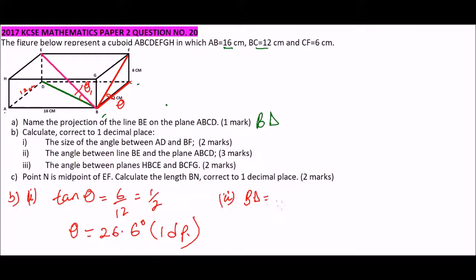So we can say that BD, using the Pythagoras theorem, is the square root of 16 squared plus 12 squared, which is equals to the square root of 400. And this is equals to 20. And therefore, once we get this is 20 centimeters, then we can now use, and we know that DE is 6 centimeters, we can now say that tan theta is equals to 6 over 20. Implying that theta 1 is equals to, once you get the tan inverse of 6 over 20, you get it is 16.7 degrees. And this is to 1 decimal place as we are required.